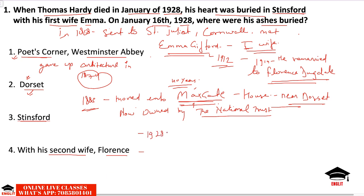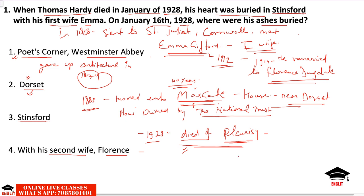In 1928, Hardy died of pleurisy — an inflammation of the cavity surrounding the lungs, causing dry cough and pain in the affected side. Essentially it was a lung disease. When Thomas Hardy died, the executor of his estate burned most of his letters and notebooks.